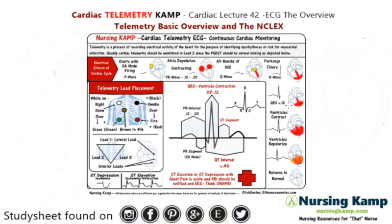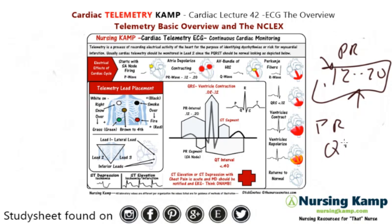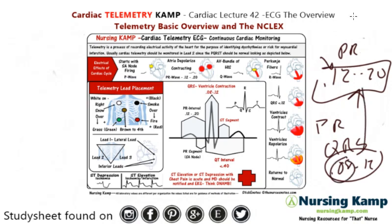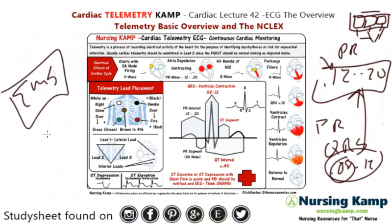NCLEX doesn't want you to be an ECG guru — it expects a basic understanding, including some measurements. The PR interval is 12 to 20, which is from the P to the R. They're not going to have you measure it out — they'll give you the actual numbers. The QRS is 0.8 to 12. I don't get too deep into ECG interpretation because it's not extensively tested. More important is knowing when there's a problem — that's the focus of NCLEX, ECG, and telemetry.